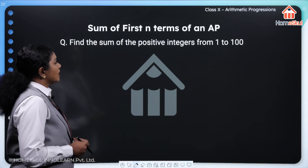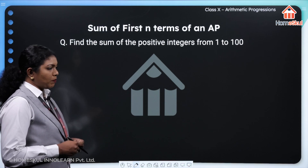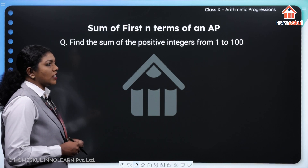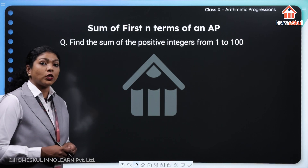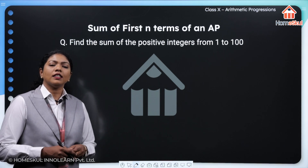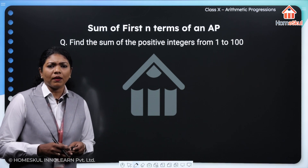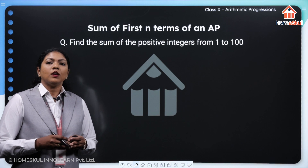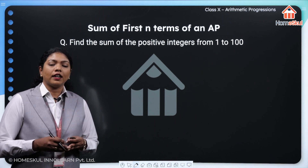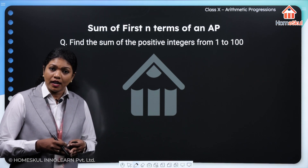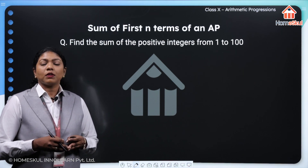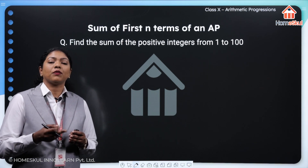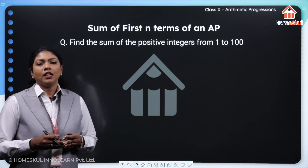Let's see the sum of first n terms of an AP. We are considering the positive integers from 1 to 100. Are they in an AP? Yes, if you consider the integers from 1 to 100, they are in an AP because the common difference is 1. With every term, if you add 1, you get the next term.